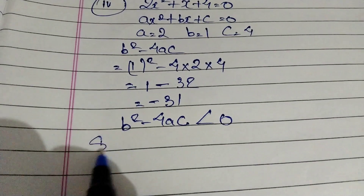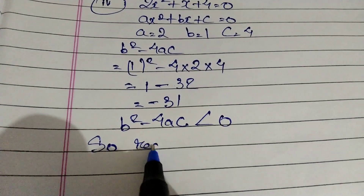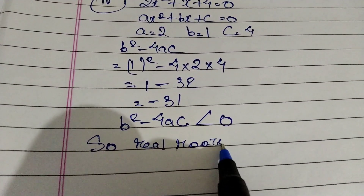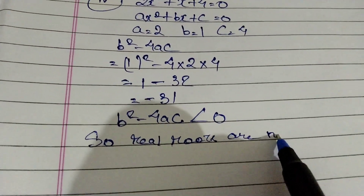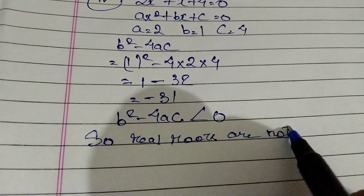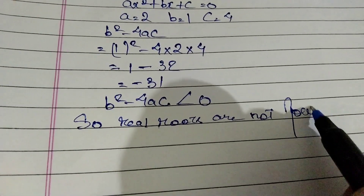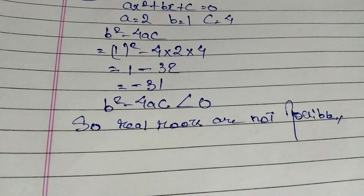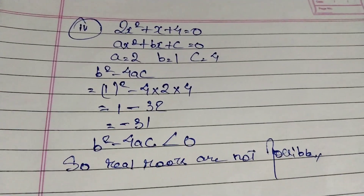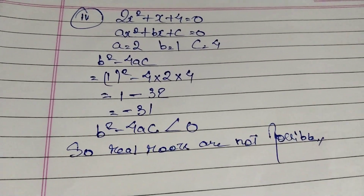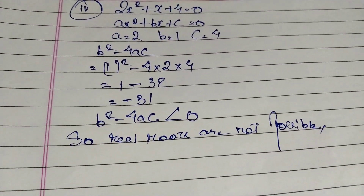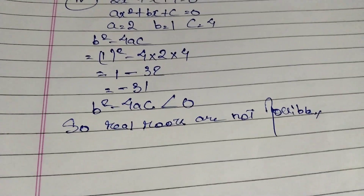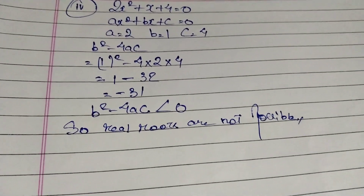Since b² minus 4ac is less than 0, and for a negative discriminant real roots are not possible, so real roots are not possible. This type of question, if it comes in your exam, is straightforward. With this we are done with exercise 4.3, question number two, serial numbers two, three, and four. Thank you.